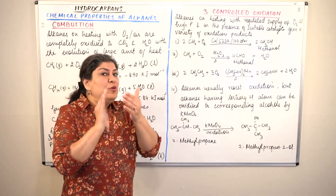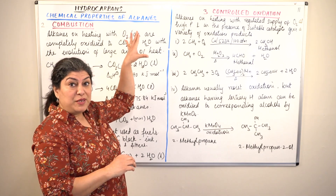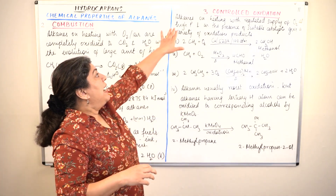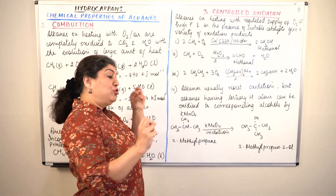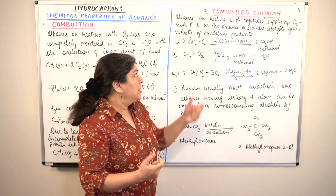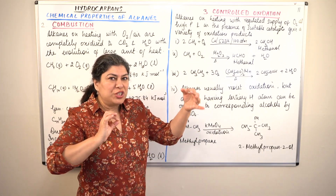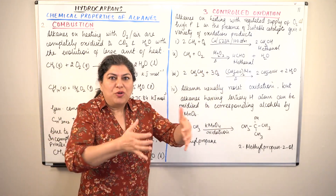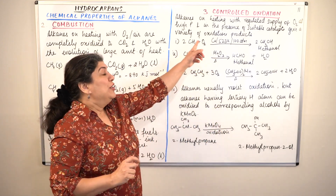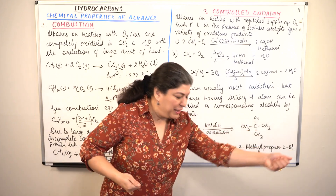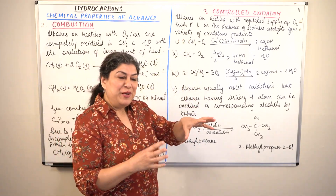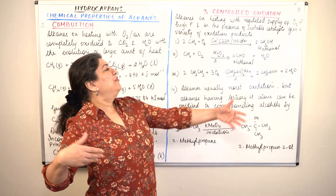So when the molecule gets help in the form of a catalyst and increased pressure, the oxygen and carbon are crushed together and forced to interact, and oxidation takes place. Alkanes, when heated with a regulated supply of oxygen — not a full supply like in combustion, but a limited continuous supply — at high pressure and with a catalyst, the molecules are excited and forced to react. In the presence of suitable catalysts, they give a variety of oxidation products.